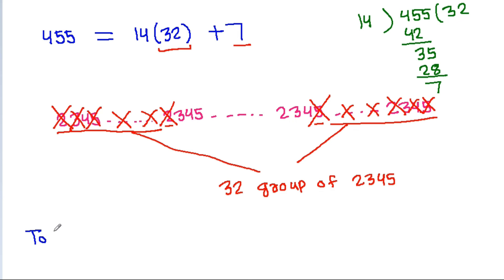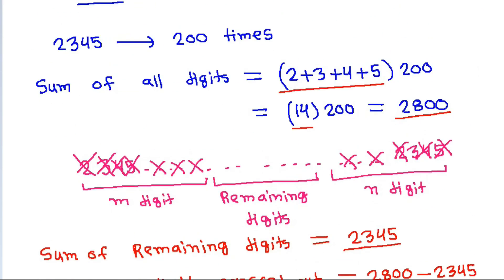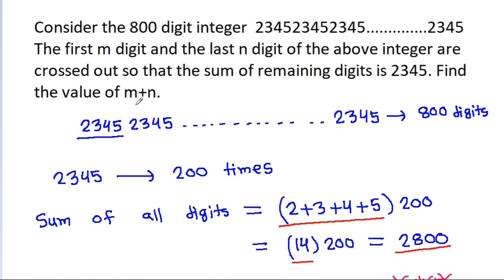So, total digits crossed out will be equal to 32 times 4 plus these two digits. And it is 128 plus 2 that is 130. So m plus n is 130.